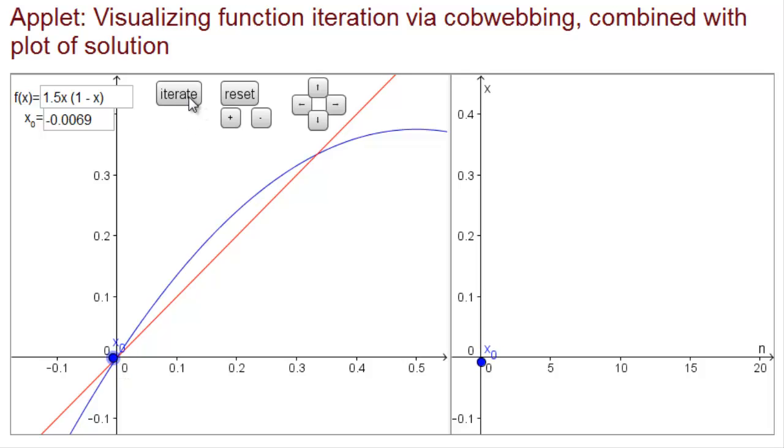And if we start just below the equilibrium, we move away from it down to negative values. No matter how close we start to the equilibrium at zero, we'll move away unless, of course, we start exactly at the equilibrium.